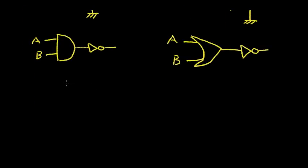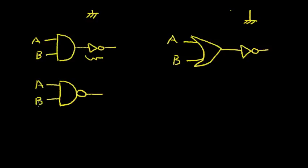Now this is a rather complex symbol, so in reality we can simplify it. Rather than drawing the entire inverter, we just put a bubble at the output. Now this becomes the conventional NAND gate symbol with input A, input B, and output. So NAND means NOT AND — this is the NOT symbol represented by the bubble, and this part is the AND gate.